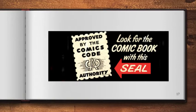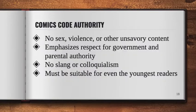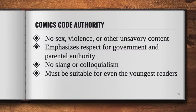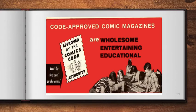In response to the panic, comic book publishers formed the Comics Magazine Association of America to avoid government interference and legislation. As a group, they created the Comics Code Authority — a series of regulations that would only put a seal of approval on a comic if it met certain requirements. Those requirements included no sex, violence, or other unsavory content, including a ban on the words 'terror' or 'horror' in the title. Comics had to emphasize respect for government and parental authority, couldn't contain slang or colloquialisms, and must be suitable even for the youngest readers — a direct appeal to the belief in childhood innocence. Comic shops were the enforcers: they wouldn't stock a comic unless it had a seal of approval. This was the moment when comics became children's literature — a genre created by adults for what they believe childhood should be.